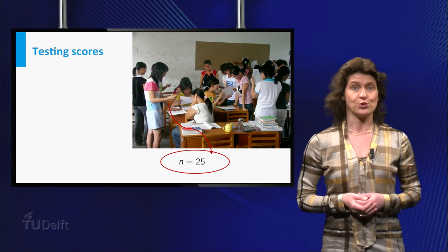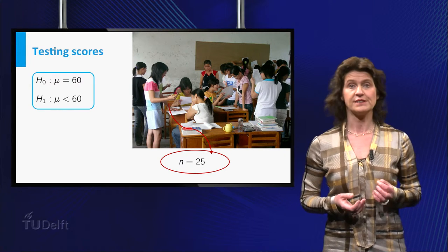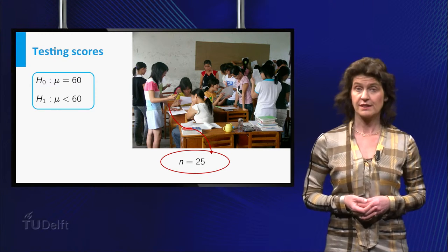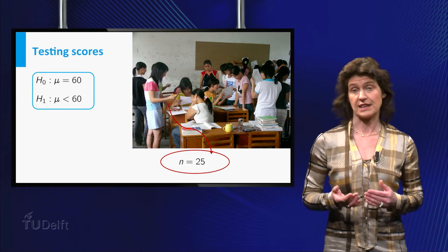What hypotheses do you test? Well, the null hypothesis is that the school does meet the national norm of 60 points. And the alternative hypothesis is that the score is below this average.